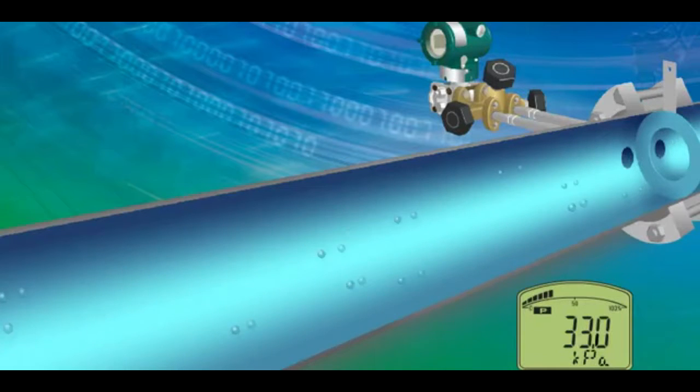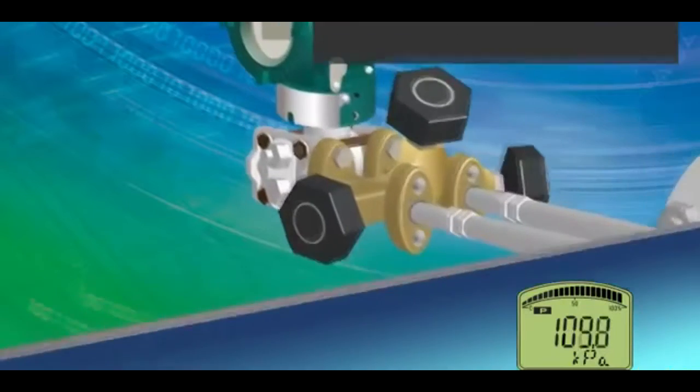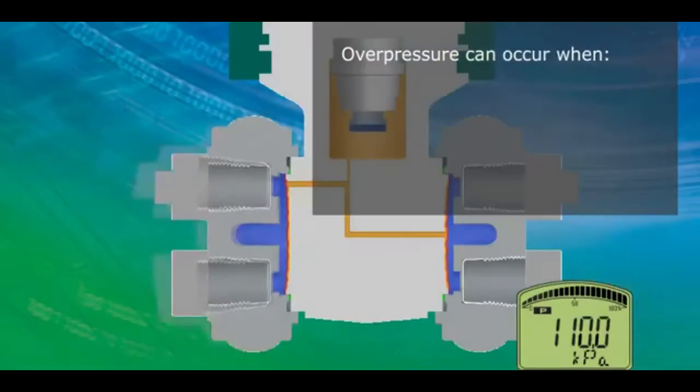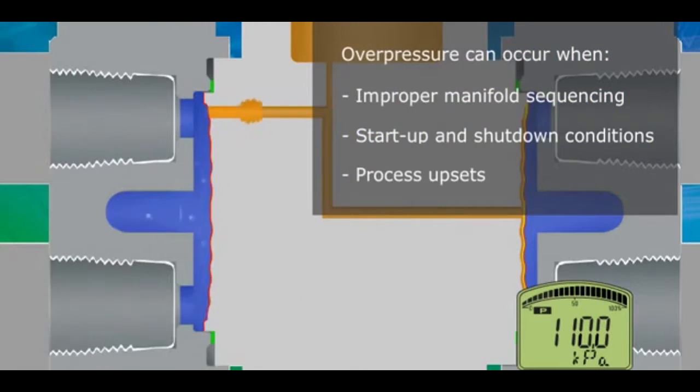Overpressure can cause a pressure transmitter to fail or impair its performance. This effect happens when excessive differential pressure is applied to the device which is greater than its measuring range. Overpressure can occur from improper manifold sequencing, startup and shutdown conditions, or a sudden process upset.